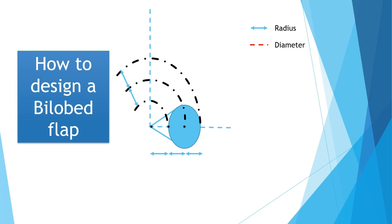Next you need to triangulate your defect and then design the two flaps involved in the bi-lobed flap. The first flap, which goes into your defect, is equal to or slightly smaller than the diameter of your defect. The diameter of the defect is the red dotted line and the first flap is the orange dotted line. The second flap, which will go into the orange dotted line position, is the yellow dotted line — this is the donor flap and will close directly.